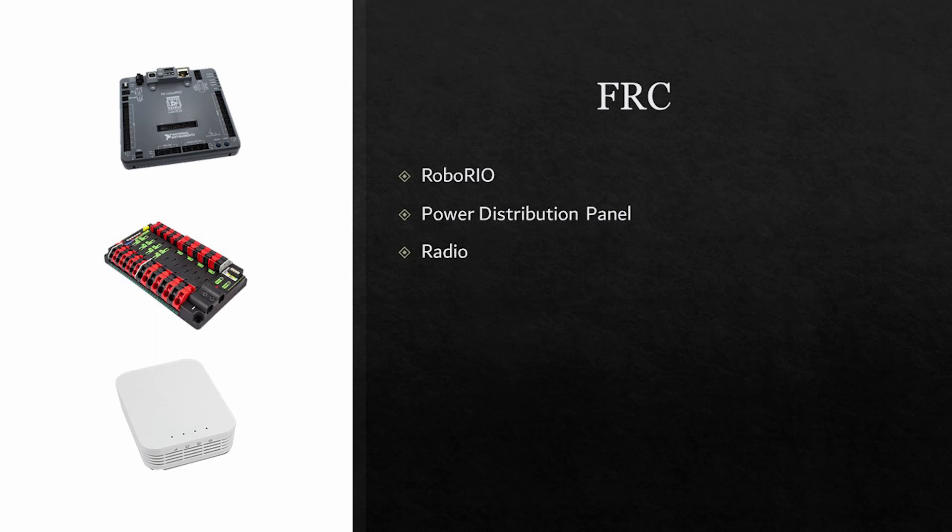The RoboRIO is probably the most expensive component on the entire robot. Please be sure to take care of it, such as not getting metal shavings inside the ports. The next component is the FRC power distribution panel, or PDP for short. This is what all components that need power are connected to.